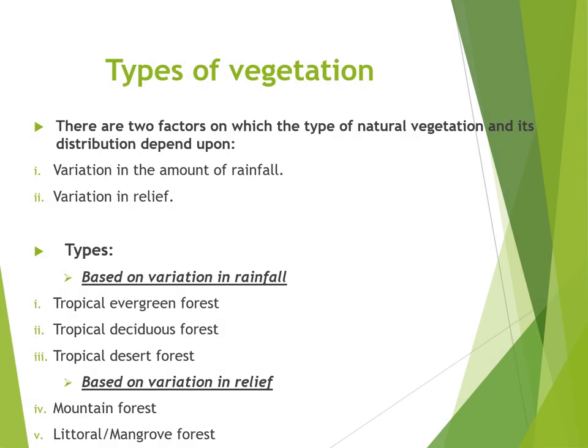There are two factors on which the type of natural vegetation and its distribution depend: variation in the amount of rainfall, and variation in relief. Based on variation in rainfall, forests are divided into three types — tropical evergreen forest, tropical deciduous forest, and tropical desert forest. Based on variation in relief, they are divided into two types — mountain forest and littoral or mangrove forest.